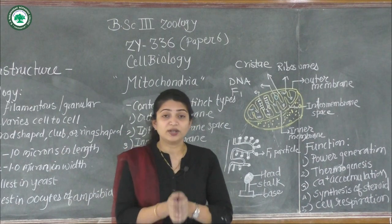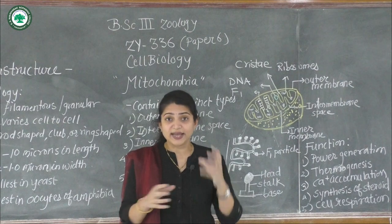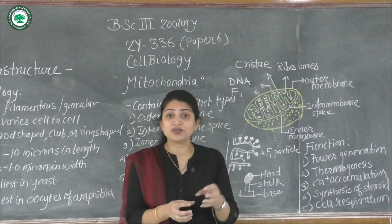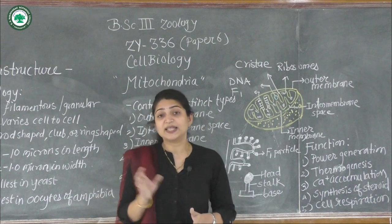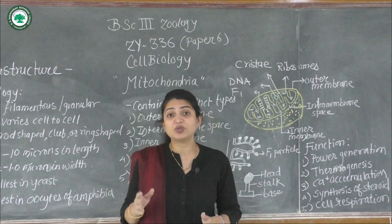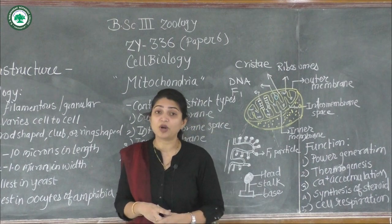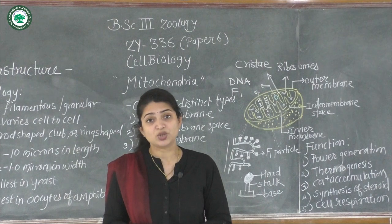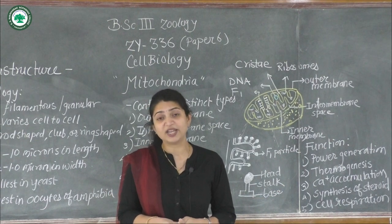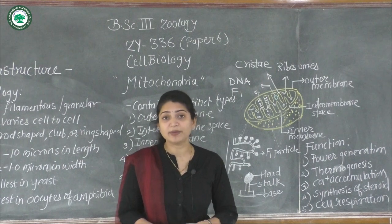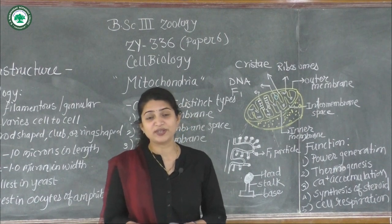Mitochondria also play a crucial role in cell death — specifically in apoptosis, or programmed cell death. Energy is required to carry out this process. If there is an insufficient number of mitochondria during apoptosis, cell death may not occur, which can give rise to abnormal cells and ultimately lead to cancerous cells. Therefore, it is very necessary that each and every function is carried out well by the mitochondria. Thank you for watching.